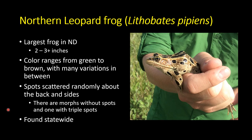On to the next species: the northern leopard frog, Lithobates pipiens — or Rana pipiens depending on who you talk to. This is the largest frog in North Dakota, getting over three inches long. It's highly variable in coloration — brown and green are the two most common, but there are also bluish, bronze, gold, and orange individuals. It gets the name 'leopard' from the spotting pattern — spots randomly placed on the back and sides.